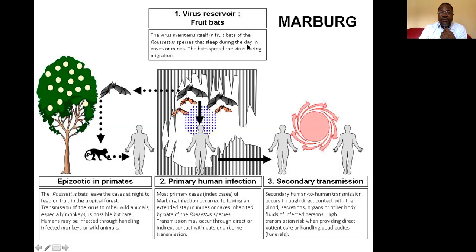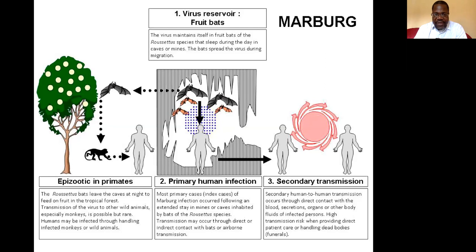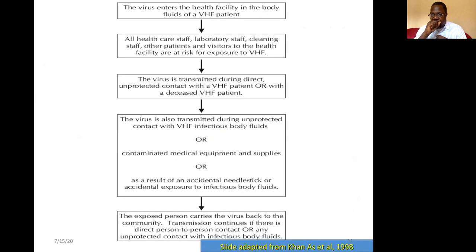Roussetus bats sleep during the day in caves or mines. When miners enter the caves, the bats suddenly wake up and move out, spreading the virus. People become exposed and infected. When miners return home, human-to-human transmission occurs and an epidemic can result.